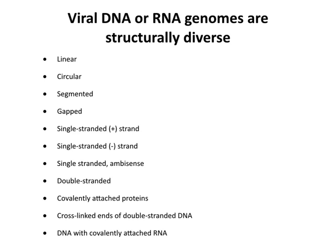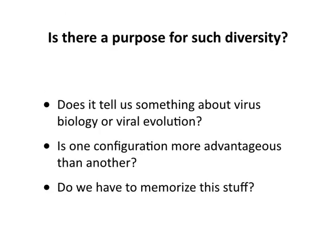Besides the seven classes, there are lots of structural variants of viral genomes: linear, circular, segmented, and gapped. Single-stranded can be plus or minus; sometimes single-stranded genomes have both polarities — plus and minus — which we call ambi-sense. There are also other modifications: covalently attached proteins to some genomes, cross-linked ends, or covalently attached RNA. None of this creates a new genome class beyond the seven — these are just additional modifications that can happen to viral genomes that make them different from each other.